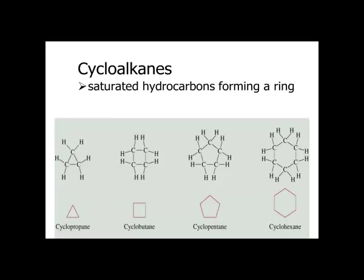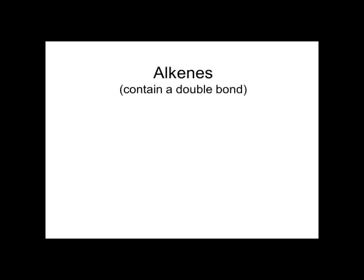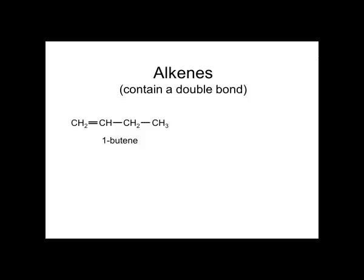Alkenes are unsaturated hydrocarbons — they contain at least one double bond. Systematically they are called ethene, propene, and butene. Ethene also has a very common name: ethylene. This compound is 1-butene — butene because it has four carbons, and 1-butene because the double bond is on the first carbon. This is 2-butene, because the double bond is on the second carbon.